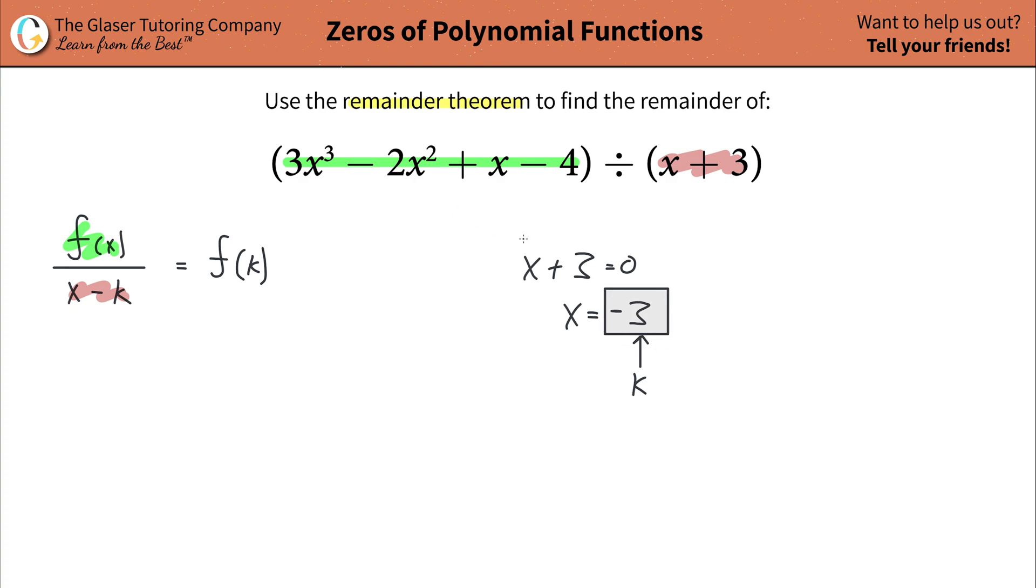Now what you're going to do is take this k value and plug it in for each x in your original function. That's what it means to plug in k here for x. So you're going to take three, multiply it by negative three cubed, minus two times negative three squared, plus negative three minus four. And all you have to do is do this math.